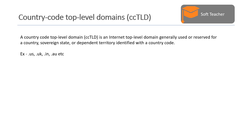A country code top level domain is an internet top level domain generally used or reserved for a country, sovereign state, or dependent territory identified with a country code. For example, .us is the extension for United States, .uk for United Kingdom, .in for India, and .au for Australia.